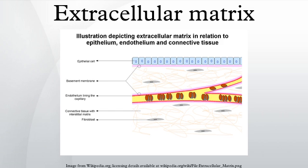Interstitial matrix is present between various animal cells. Gels of polysaccharides and fibrous proteins fill the interstitial space and act as a compression buffer against the stress placed on the ECM.